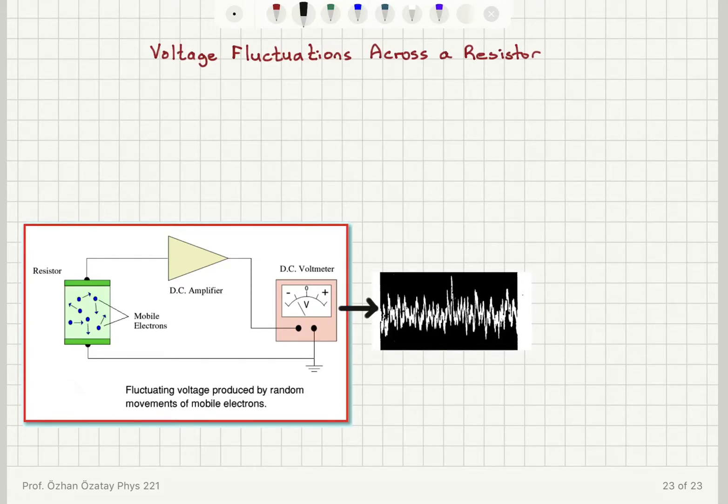When we connect a resistor to a voltmeter or an oscilloscope, we find that without applying any voltage or current on the resistor, due to random fluctuations of the electrons inside the resistor, there will be fluctuations of the voltage around zero.